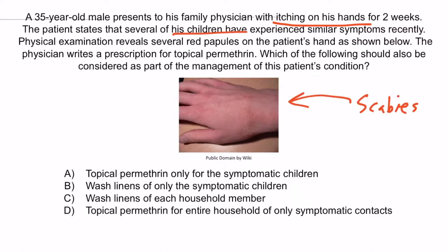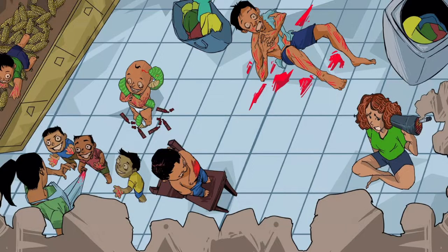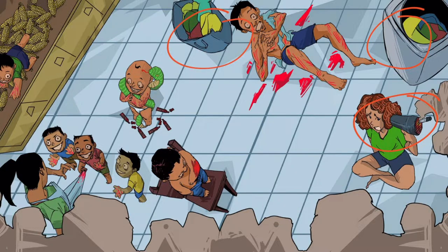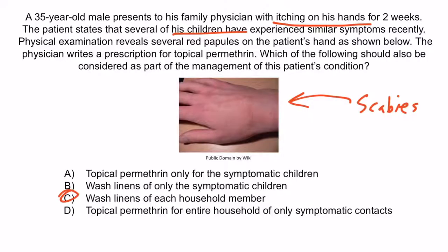With a scabies outbreak in mind, the correct answer is choice C — all members of the house should have their linens washed. The infection is spread by person-to-person contact, so all members of the house should be treated with permethrin and washing of linens. Choice A is wrong because it excludes asymptomatic members who could be harboring the infection. B is wrong for the same reason, and so is D. With that, you've learned everything you need to know about scabies.